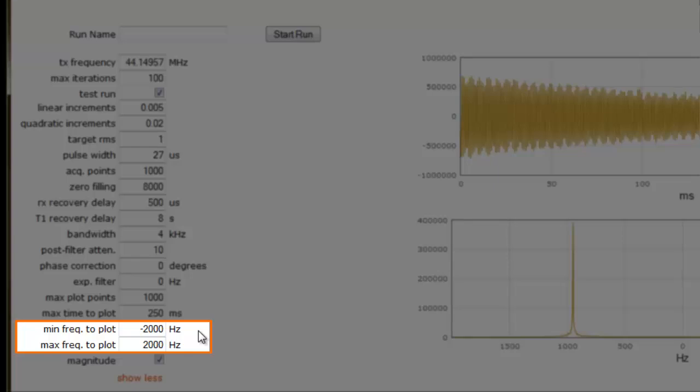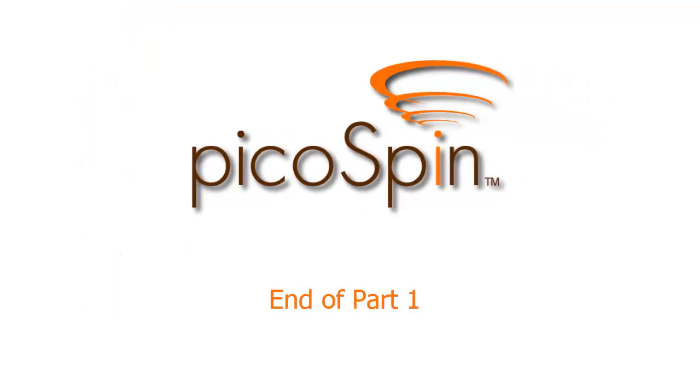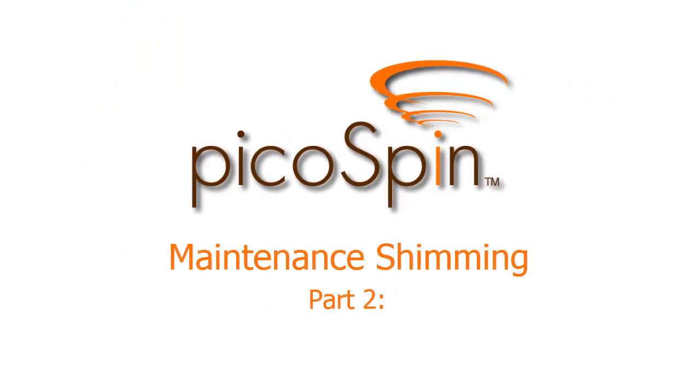We can leave the minimum and maximum frequency to plot set to minus 2000 and plus 2000 Hz. We'll adjust these values later, but for now let's leave them set to the maximum frequency range for this bandwidth. Now that we're familiar with all the parameters needed for shimming, we can move on to part 2 of this video which describes running the AutoShim script. So let's get started with shimming.